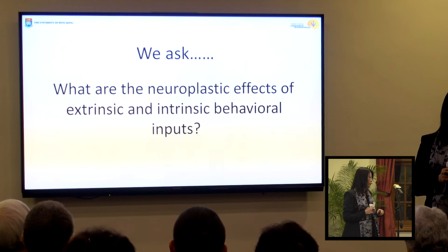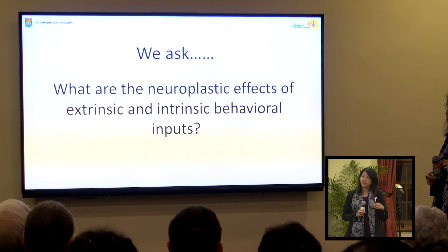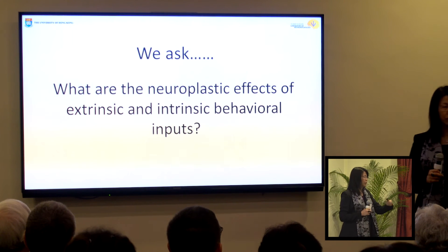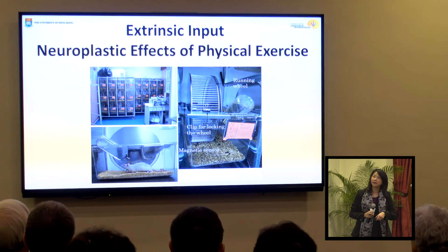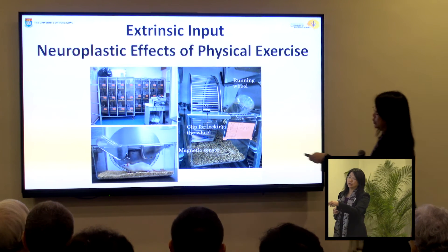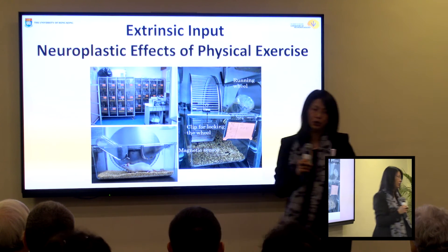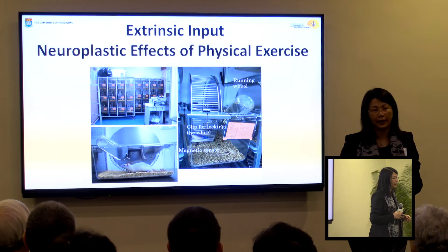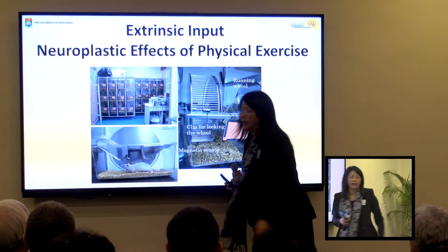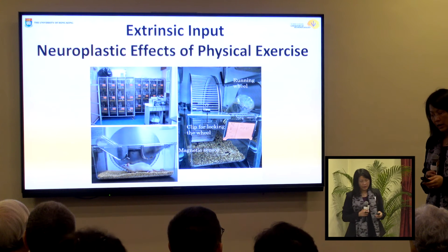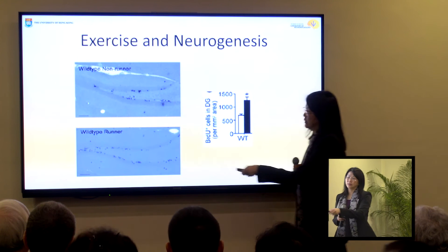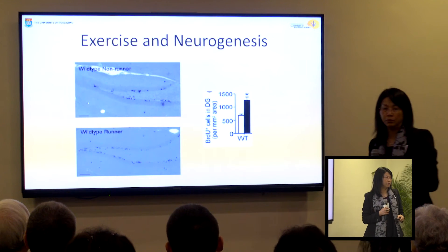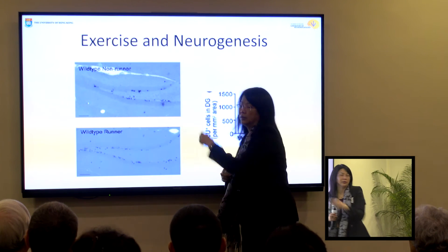We wanted to know what specific changes can be brought about by extrinsic behavioral input, for example exercise. Since we can't lock students in cages, we used rats as subjects. We tested a group of rats allowed to run regularly and another group raised in cages with no chance to exercise. Very interestingly, the runners had a little bit more stem cells — there was positive neural proliferation in the hippocampal region compared with the non-runners.